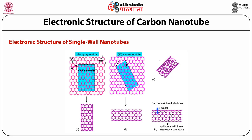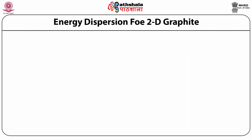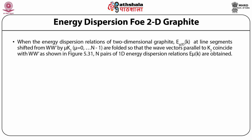Part B shows the creation of an NN armchair nanotube. C corresponds to an Nm chiral nanotube and part D represents the bonding structure of a nanotube. The N equal to 2 quantum number of carbon has four electrons. Three of these electrons are bonded to its three nearest neighbors by sp2 bonding. The fourth electron is a pi orbital perpendicular to the cylindrical surface.